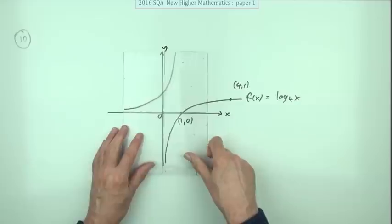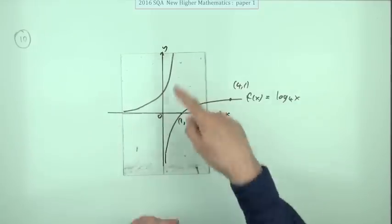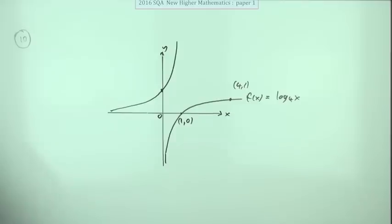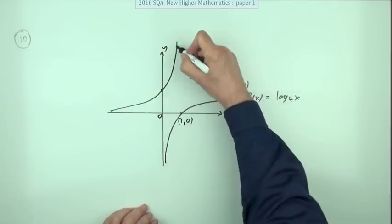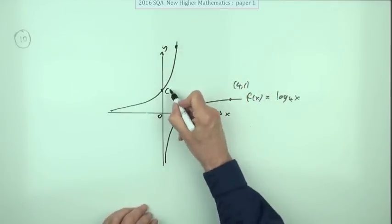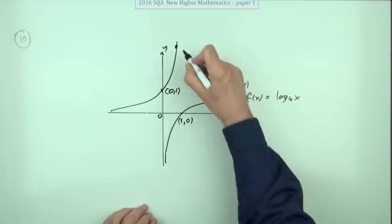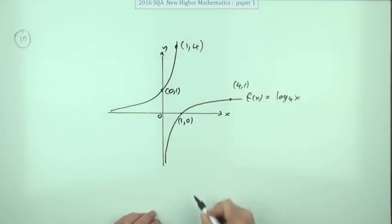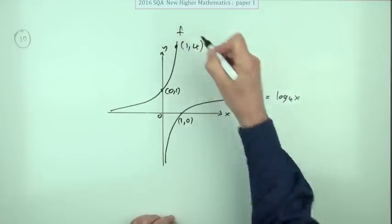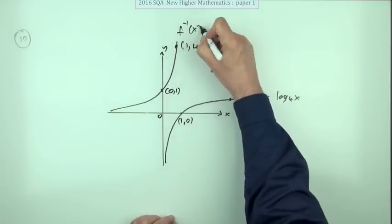You recognize, of course, the inverse is the exponential. Putting those two points back in: so if that's (1,0), that must be the other way around (0,1), and if that's (4,1), that must be the other way around (1,4). And if that's f(x), that'll be the inverse of it.